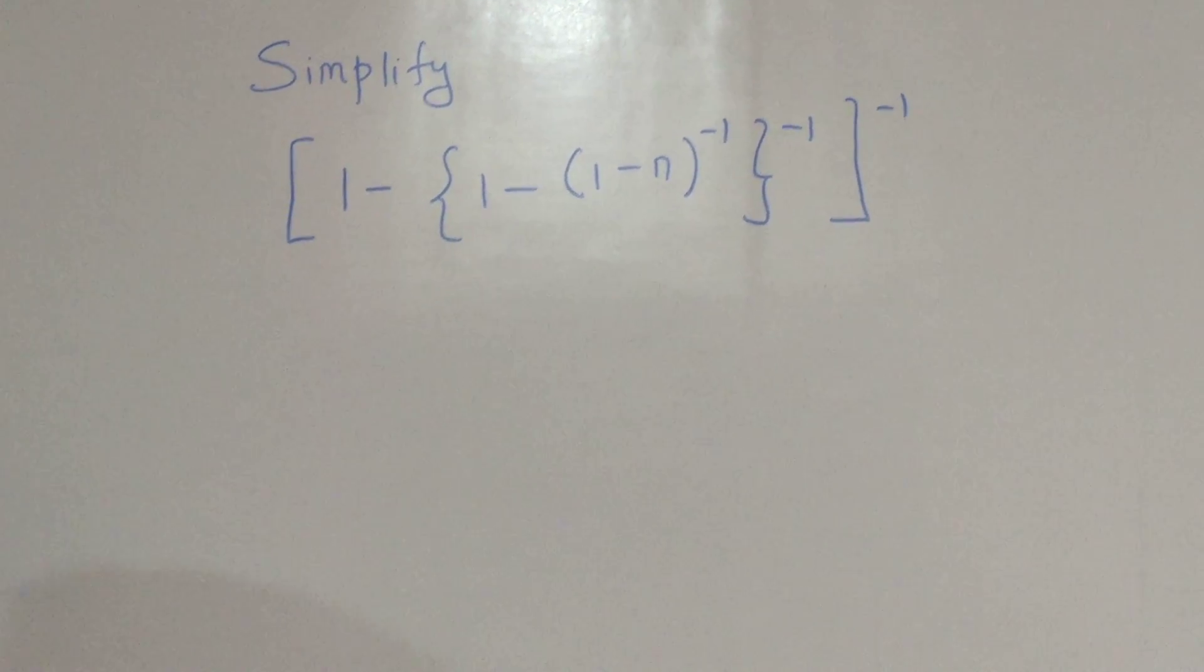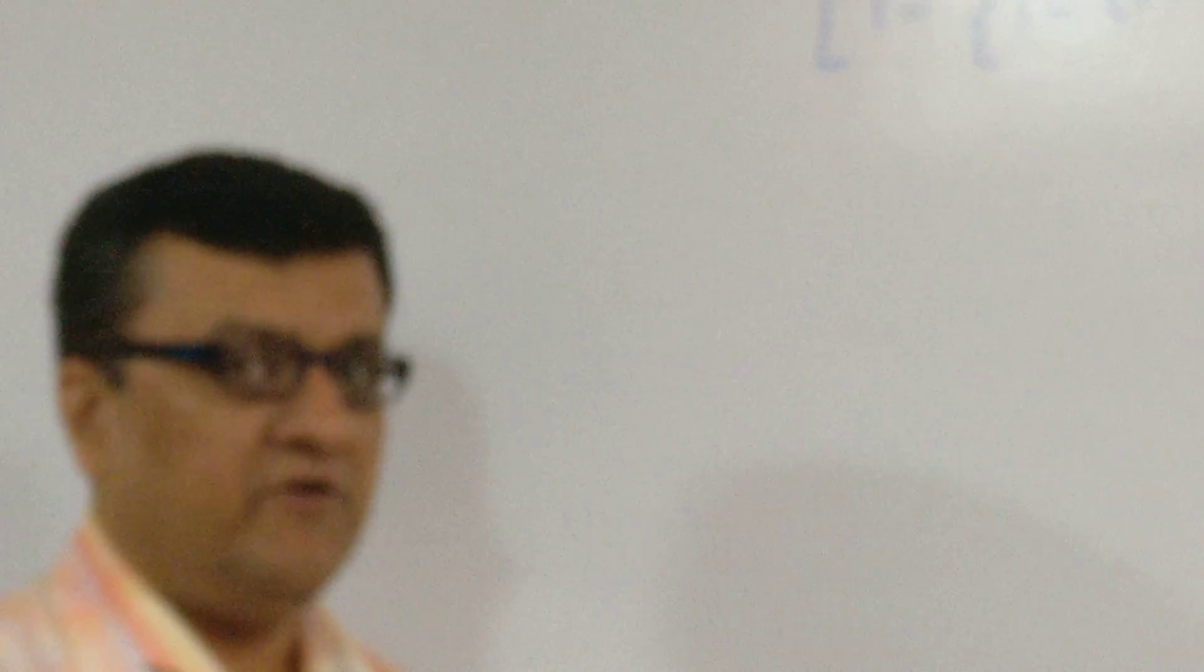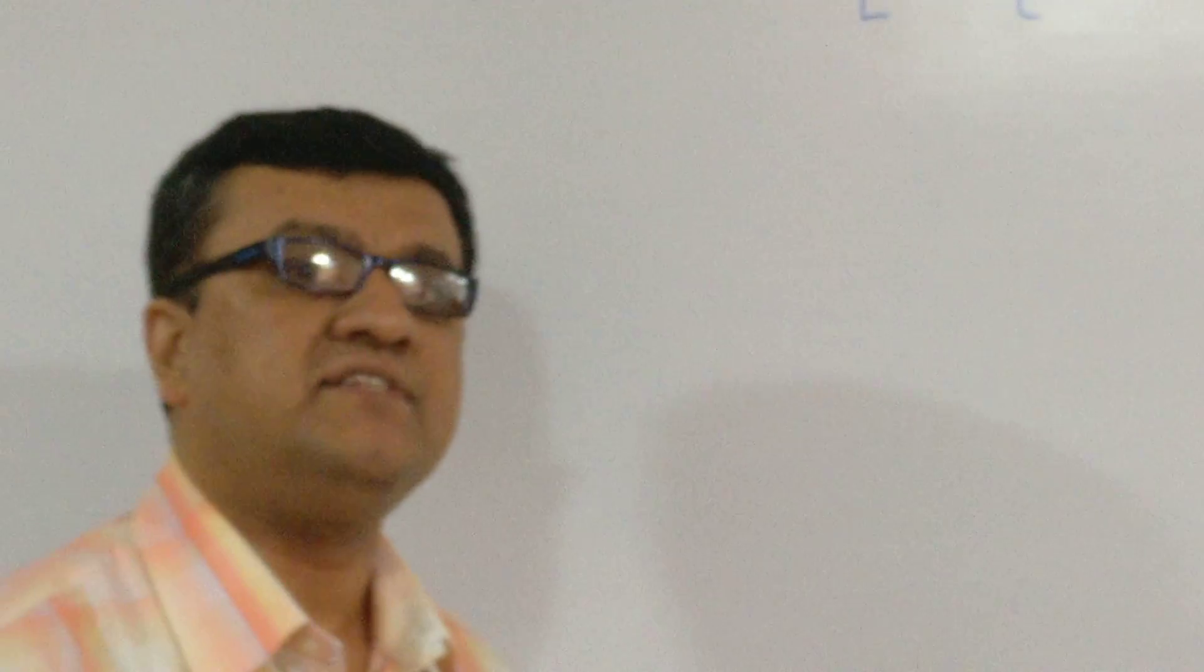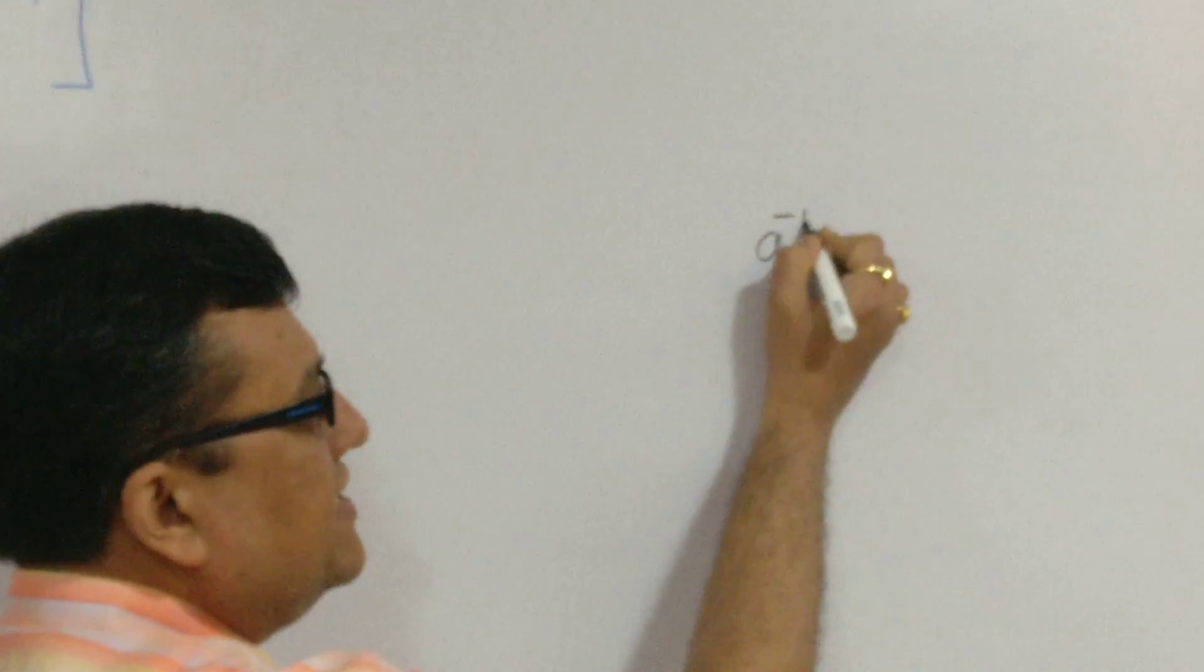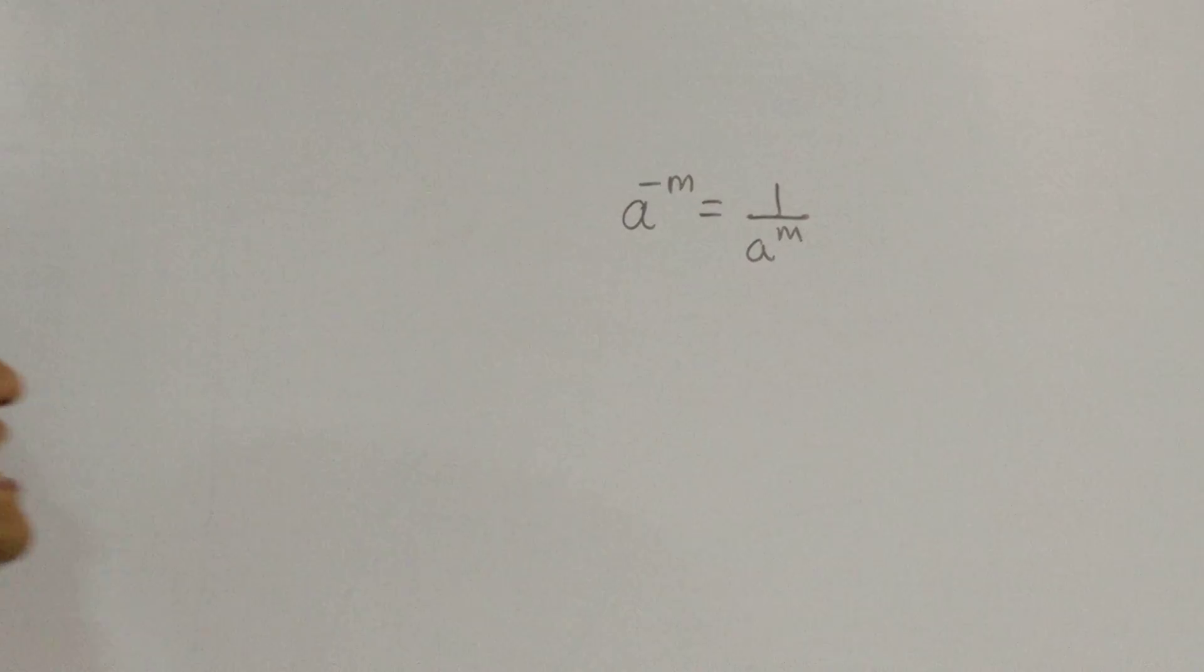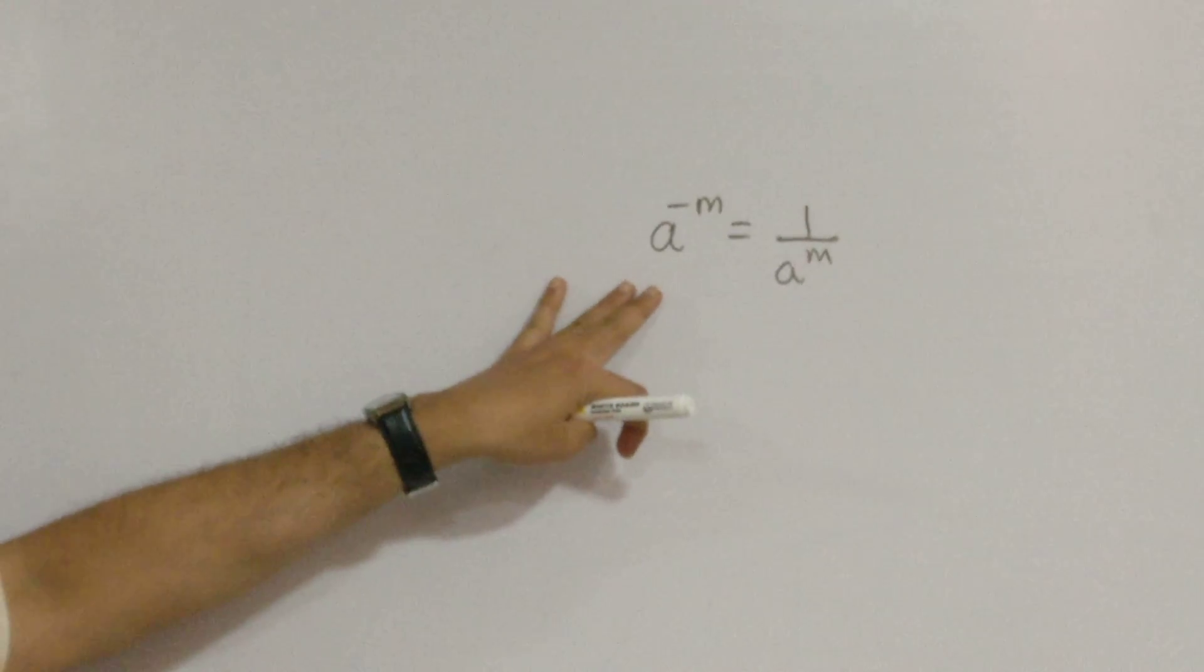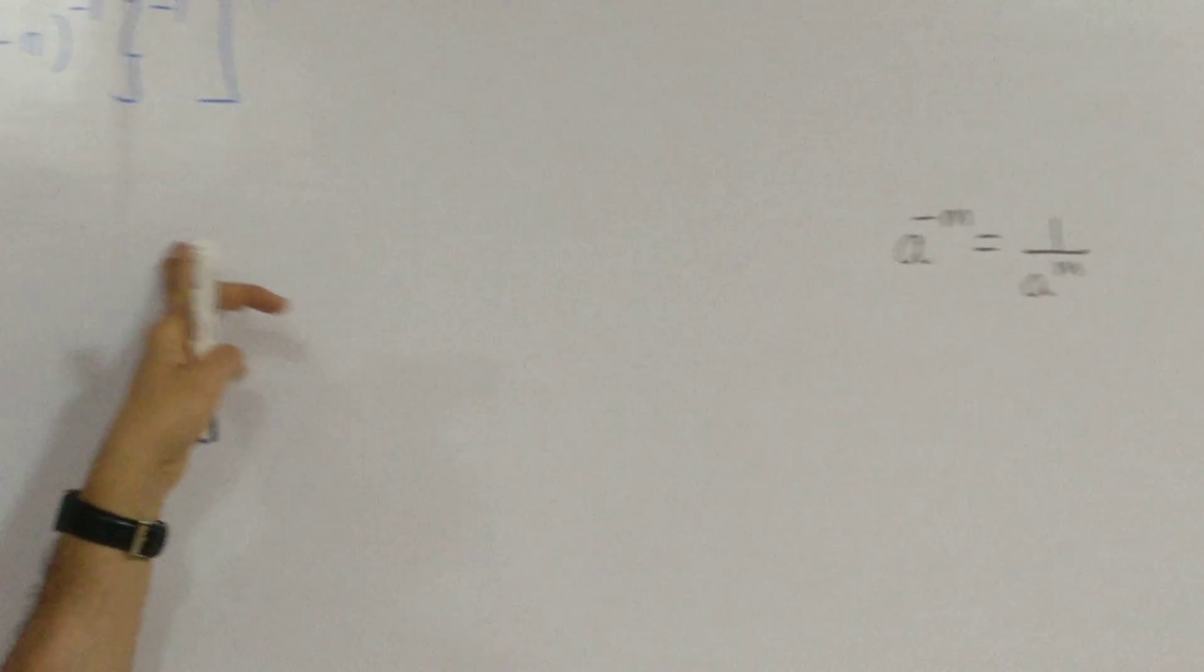Now since you are very much aware about all the norms and if you are not aware still now you can always look at my previous slides where I have listed all the formulas and basic explanation of indices. Now within that we have one simple formula. A raise to minus m is 1 upon A raise to m. We are going to apply this formula over here in our sum. So let's see how the things work out.